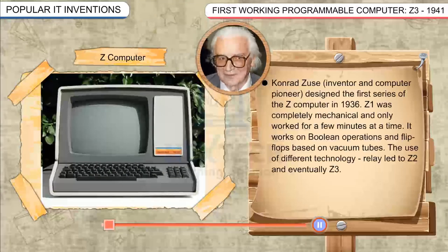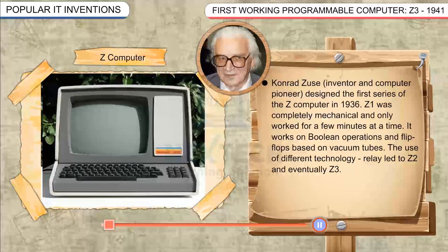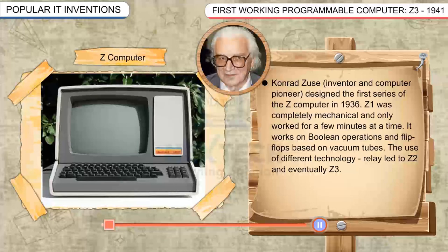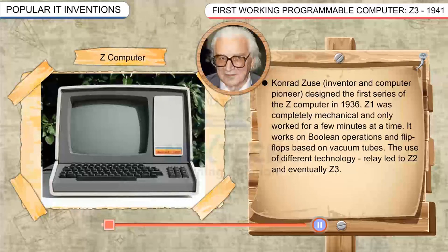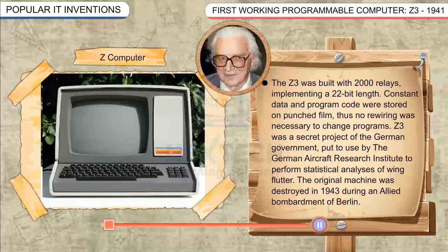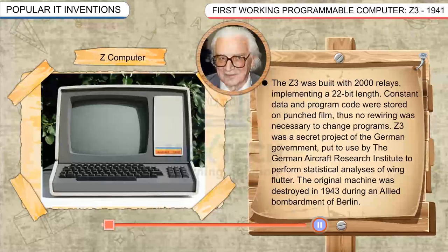First Working Programmable Computer, 1941. Konrad Zuse, inventor and computer pioneer, designed the first series of the Z computer in 1936. Z1 was completely mechanical and only worked for a few minutes at a time. It used Boolean operations and flip-flops based on vacuum tubes. The use of relay technology led to Z2 and eventually Z3. The Z3 was built with 2000 relays, implementing a 22-bit word length.